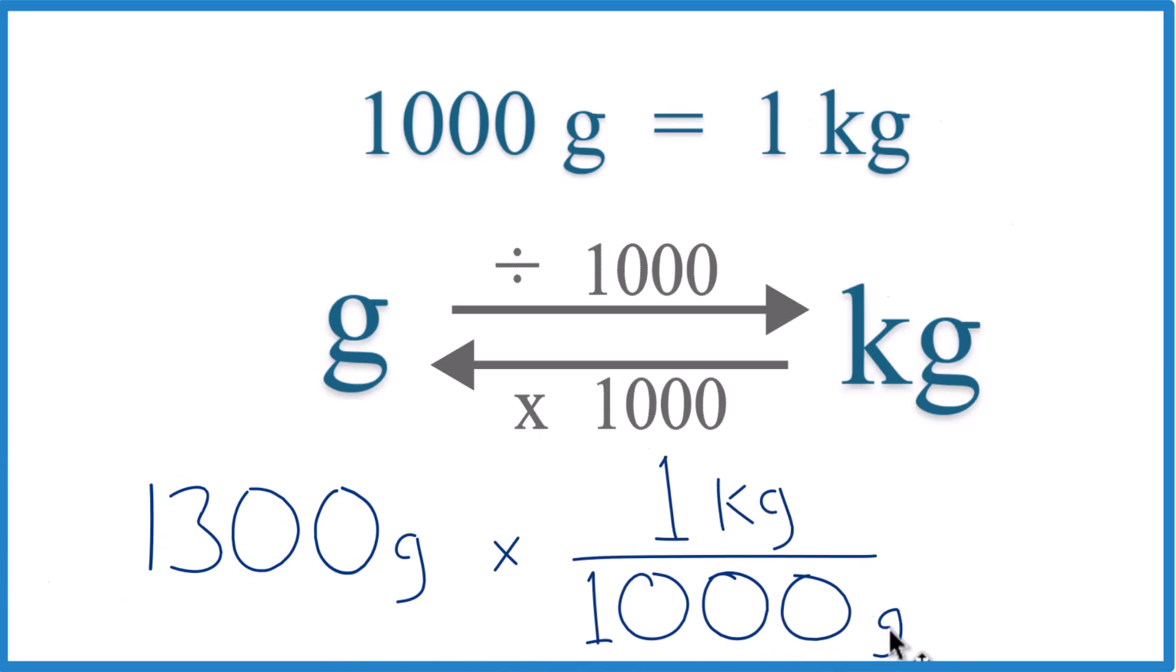1 kilogram is 1,000 grams. This way, grams, top and bottom, they're gone. 1,300 times 1 kilogram, that's 1,300 kilograms, divide by 1,000, and you get 1.3 kilograms, just like we did before.